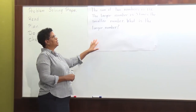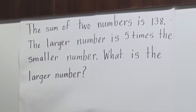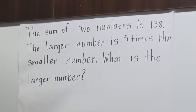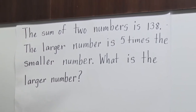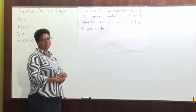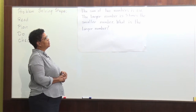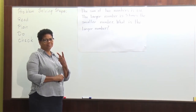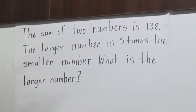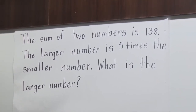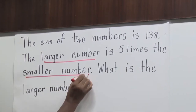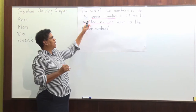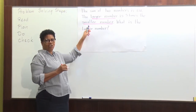Our first problem is on the board. As I read, you can read along with me. The sum of two numbers is 138. The larger number is five times the smaller number. What is the larger number? So here we have two shares. In reading, I am seeing that it's two shares. The first share is called the larger number and the second share is called the smaller number. Because one is larger and the other is smaller, right away we can see that they are unequal shares.